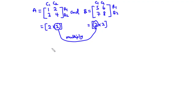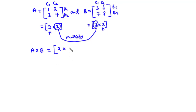If the two values are not the same, then it means you cannot multiply those two matrices. Now, the order of the resultant matrix — that is, after multiplying these two matrices to get A times B — is given by the number of rows of the first matrix, which is 2, by the number of columns of the second matrix, which is also 2. Therefore, if you multiply a 2 by 2 matrix by another 2 by 2 matrix, the resultant matrix is also 2 by 2.